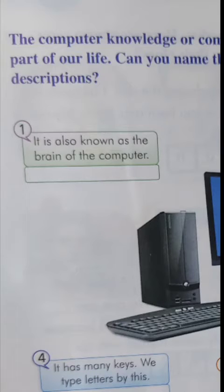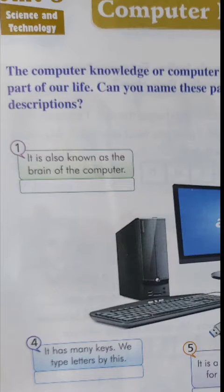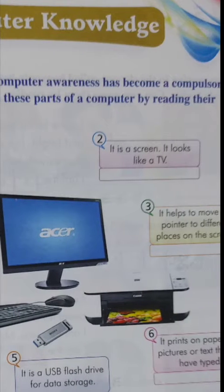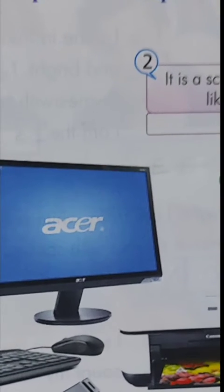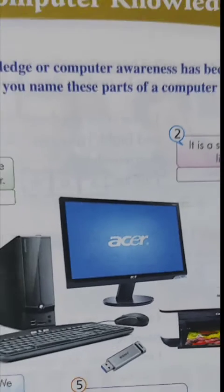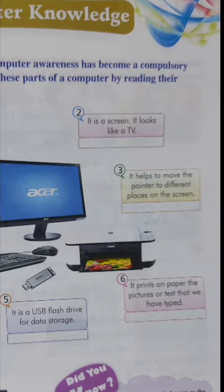The function of the CPU is to process the data we give to the computer. All the functions the computer performs are done by the CPU. Number two looks like a TV screen - this is the monitor. It is an output device that displays the things we do on the computer.